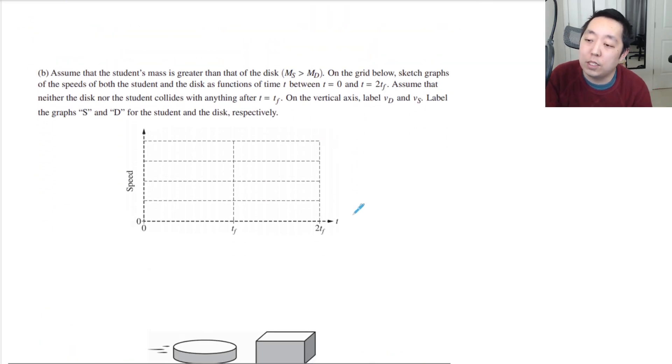Assume the student's mass is greater than that of the disk. Sketch graphs of the speeds of both the student and the disk as functions of time between 0 and 2TF. The speeds, not the velocity, so we don't care about the direction. We're just going to plot only positive values.